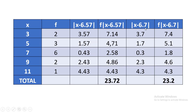Now we do the same for the median value of 6.7. The absolute deviations are: |3 − 6.7| = 3.7, |5 − 6.7| = 1.7, |7 − 6.7| = 0.3, |9 − 6.7| = 2.3, |11 − 6.7| = 4.3. Multiplying by frequency: 2×3.7 = 7.4, 3×1.7 = 5.1, 6×0.3 = 1.8, 2×2.3 = 4.6, 1×4.3 = 4.3. The total is 23.2.